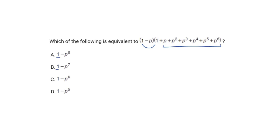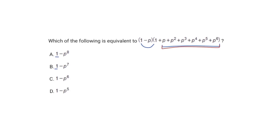Currently I have all these p values in red. All these are positive values of p, but my answer choices are negative values of p, because I need to account for this second variable — the negative p. I have to distribute it out to everything. When I distribute it to the 1, I get a negative p. When I distribute it to the positive p, I get a negative p squared.